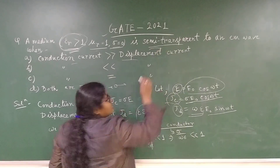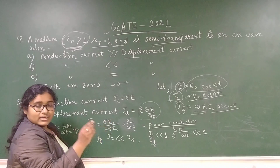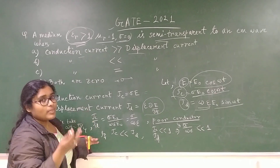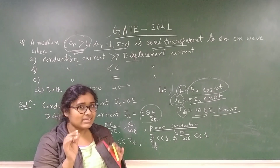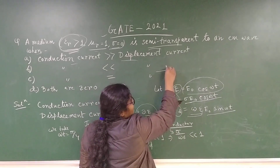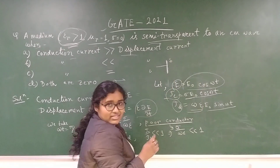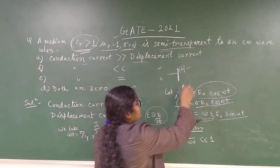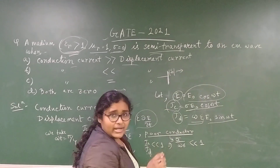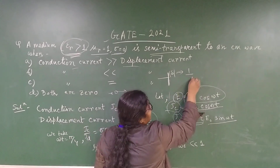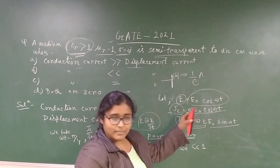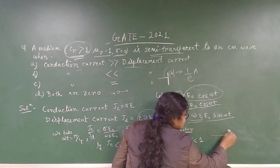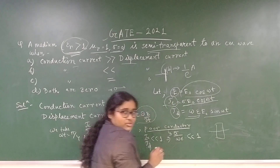Now, this medium is semi-transparent, meaning the material can pass light through it. In a metal, light cannot pass because there is skin depth — the light can only penetrate up to a certain small distance depending on the material. Skin depth is the distance where the amplitude of the electric field becomes 1/e times its original amplitude. Here, since the medium is semi-transparent, light can pass through it.